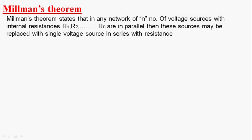Millman's theorem states that in any network of n number of voltage sources with internal resistances R1, R2, R3, and so on, Rn, which are in parallel, then these sources may be replaced with a single voltage source in series with resistance. Let us consider that single voltage source as Vm in series with single resistance R.